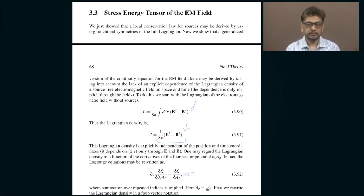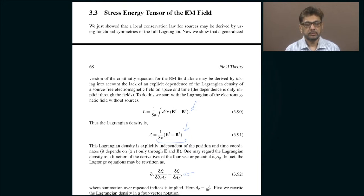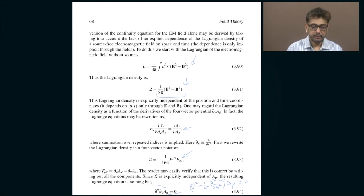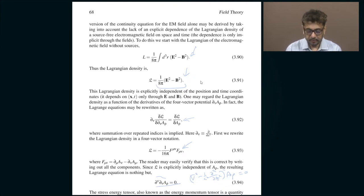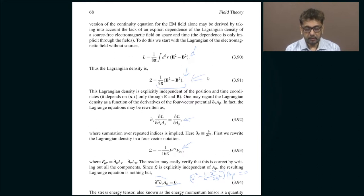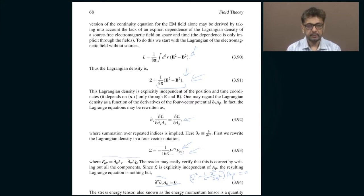To show that, we start with the Lagrangian of the sourceless electromagnetic field — imagine an electromagnetic field with no sources. The Lagrangian is given by the integral of the Lagrangian density, which is the square of the electric field minus the square of the magnetic field, i.e., the difference of their squares. Working in CGS units, E and B have the same dimensions. You can also express this Lagrangian in terms of the field tensor — the anti-symmetric 4×4 matrix. In terms of field tensors, the Lagrangian is purely a function of the derivatives of the potentials.